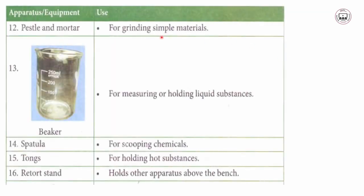Number eleven, the pestle and mortar — used for grinding simple materials. Number twelve, the beaker — used for measuring or holding liquid substances. Much laboratory work involves liquids, so beakers are used to hold and measure them. Number thirteen, the spatula — for scooping chemicals. Number fourteen, tongs — for holding very hot substances during heating. Number fifteen, the retort stand — to hold other apparatus above the bench.